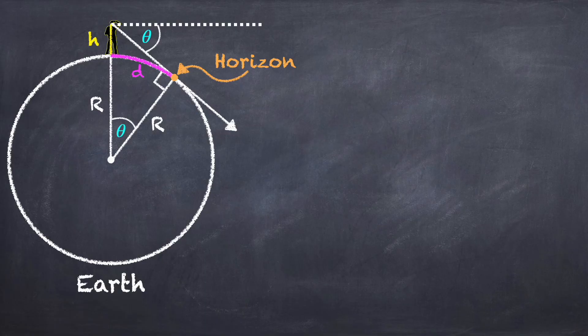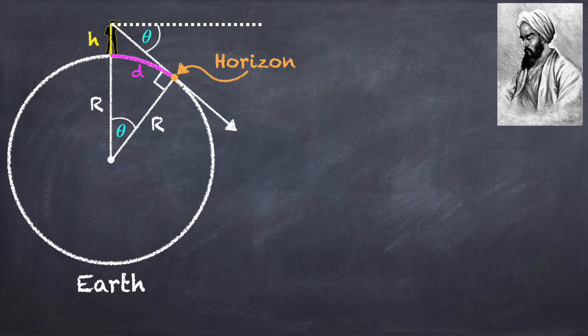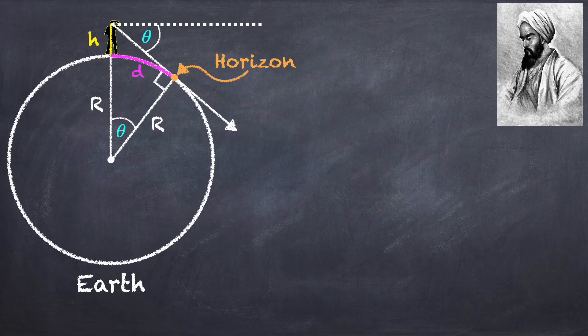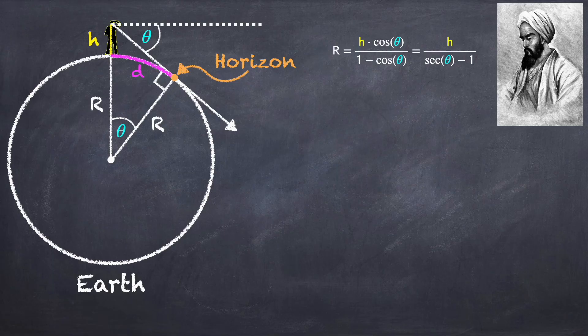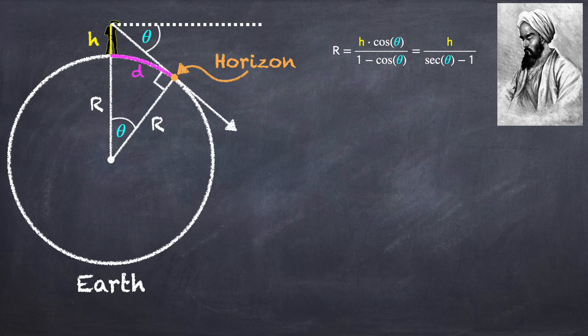Now, if you've seen my video on Albiruni's method for measuring the radius of the Earth, you'll recognize this diagram. It's the exact same geometry, and from this triangle we can find the radius of the Earth if you know the height h and the angle theta. This is what's so great about Albiruni's method.